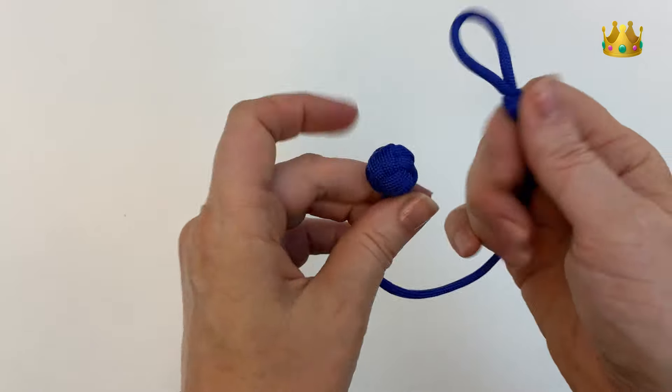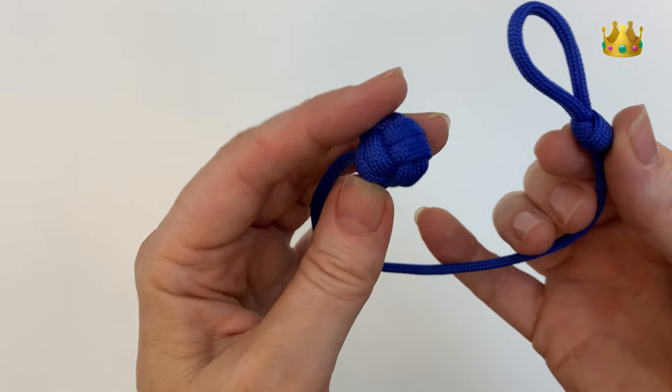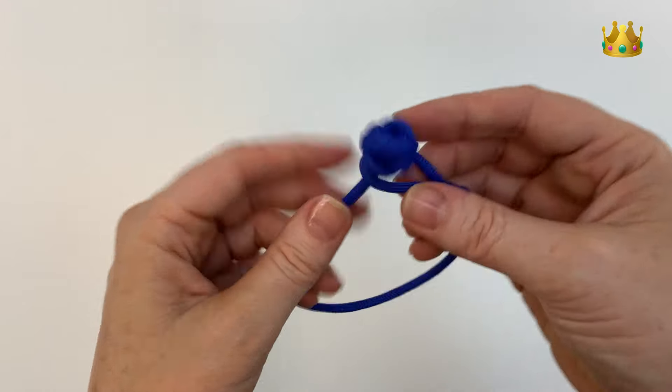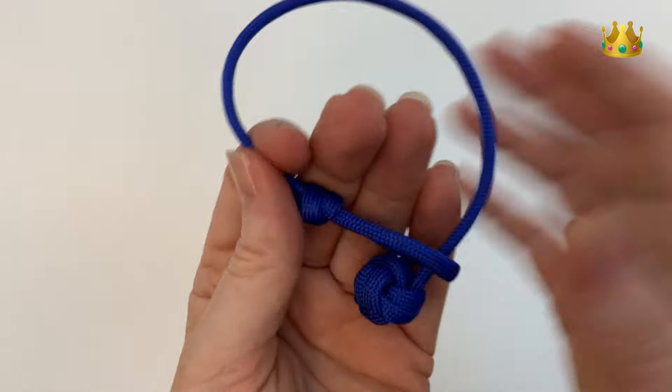Hey guys, welcome back. In this video we're making a bracelet that has a little monkey fist round knot on one end and a little loop made with a sliding knot on the other.